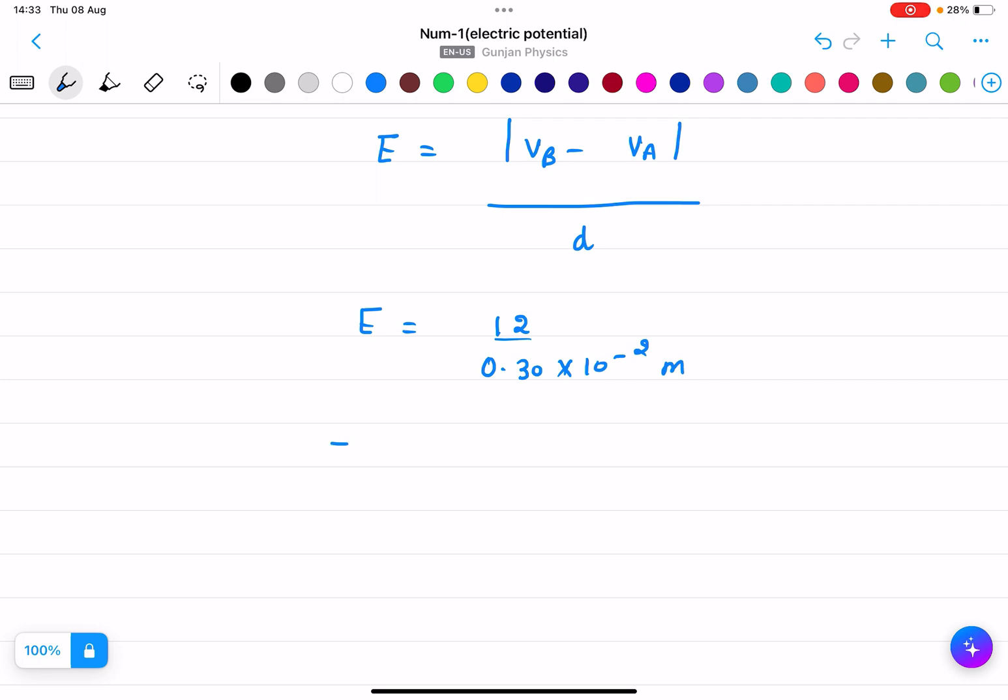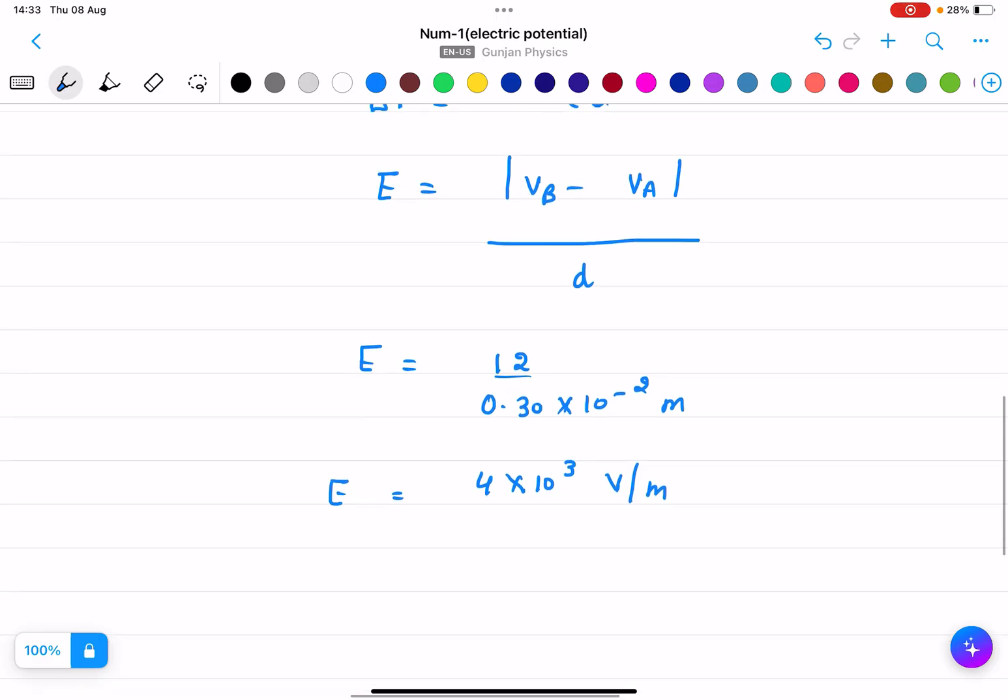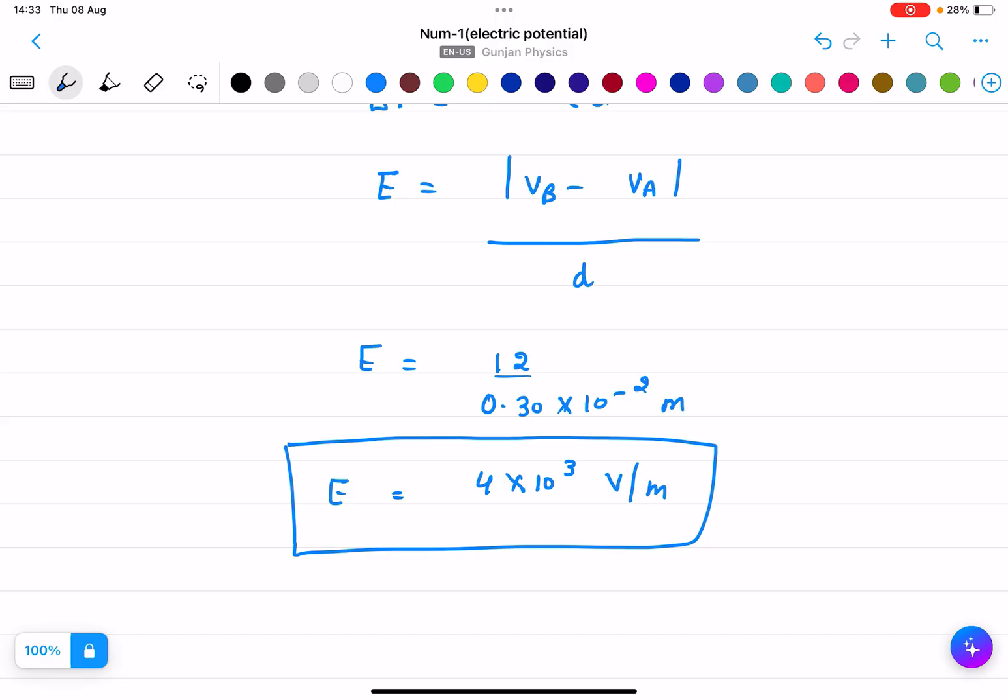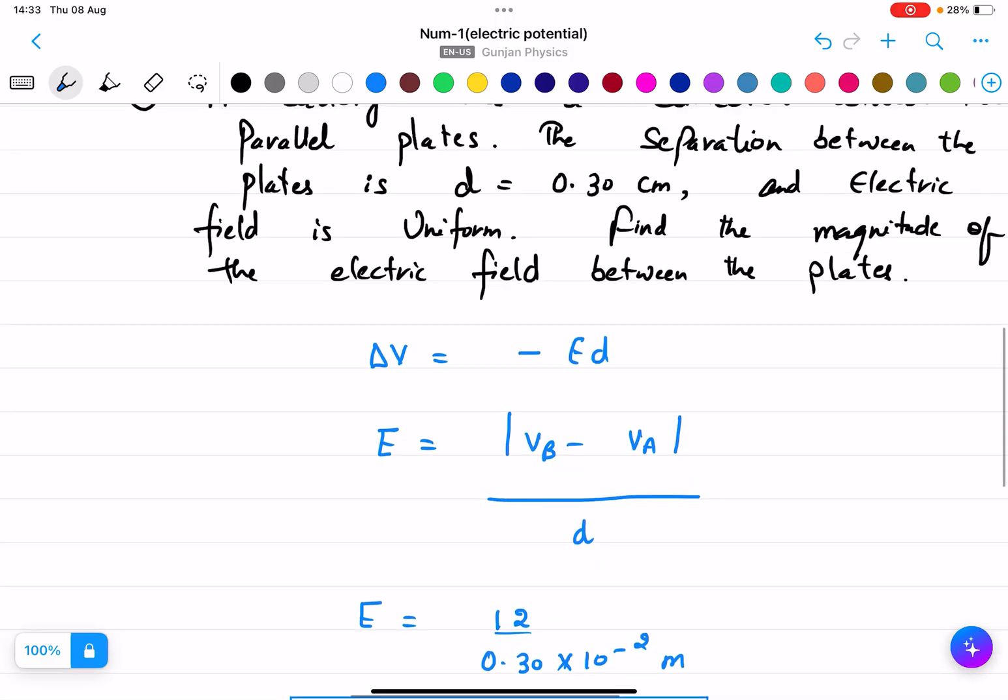And if we solve it then I will get 4 × 10^3 volt per meter. So we need to calculate the electric field and we get this electric field. Always remember the unit of electric field will be this.